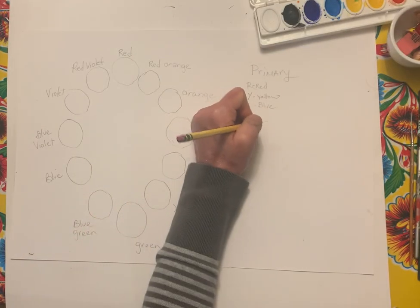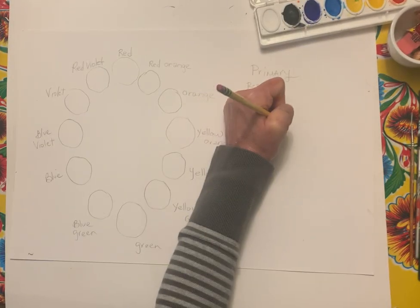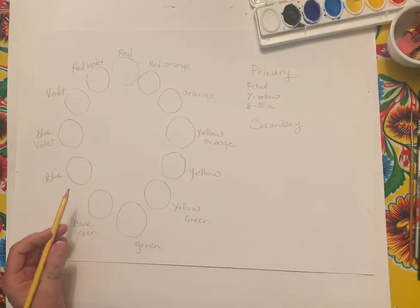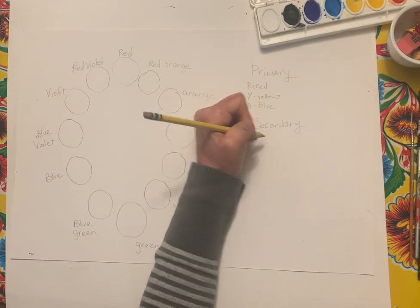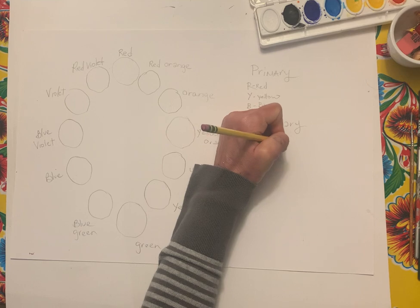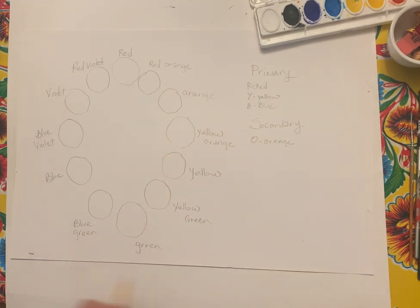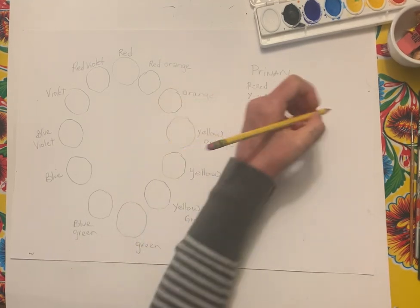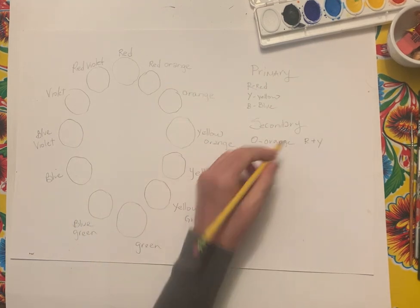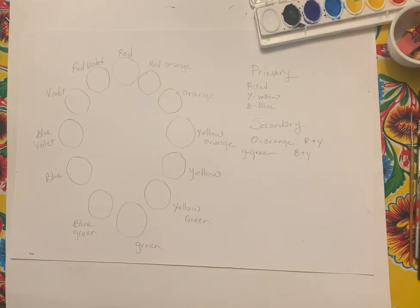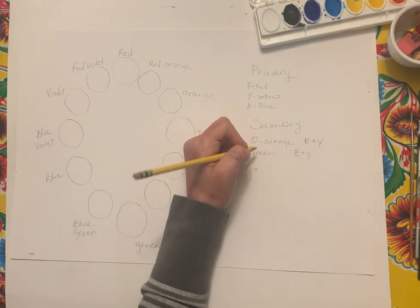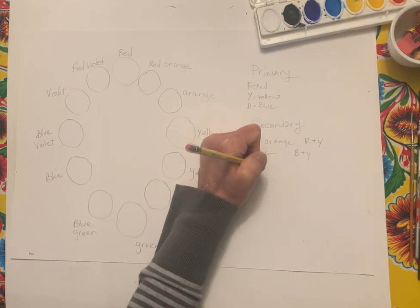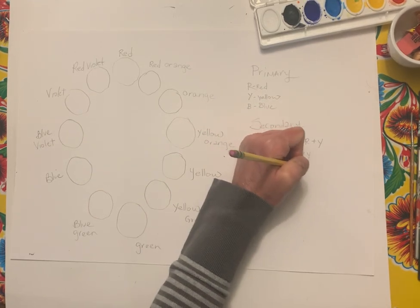We also have secondary colors, and those are created by mixing the primary colors. When you mix red and yellow you get orange. When you mix yellow and blue you get green. And violet is red plus blue.